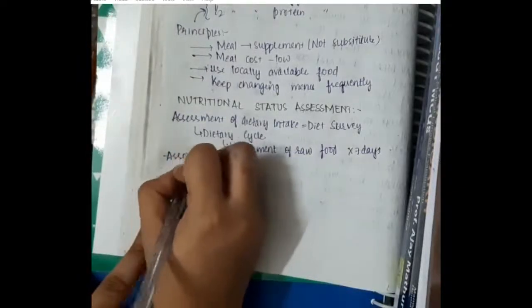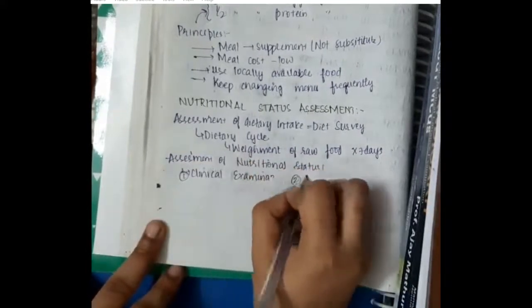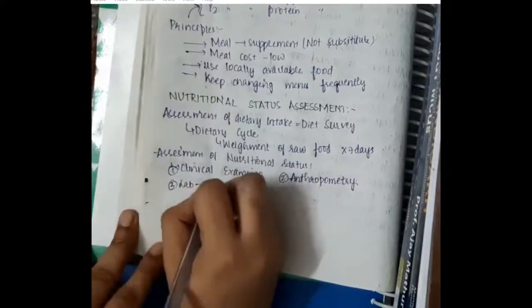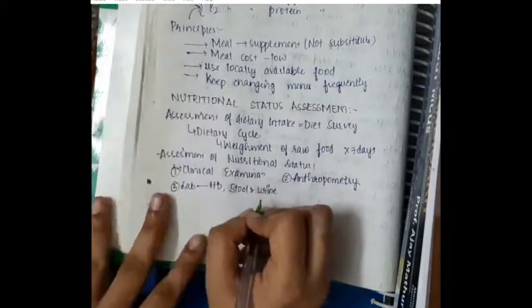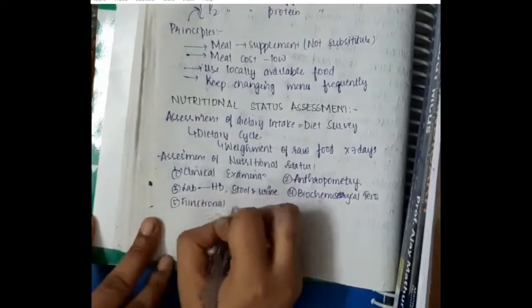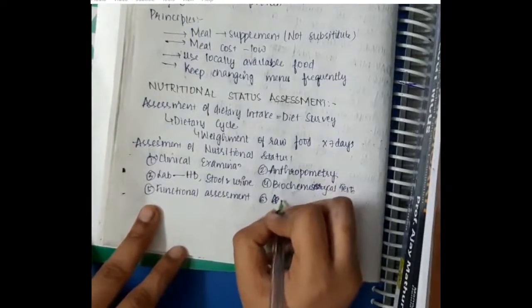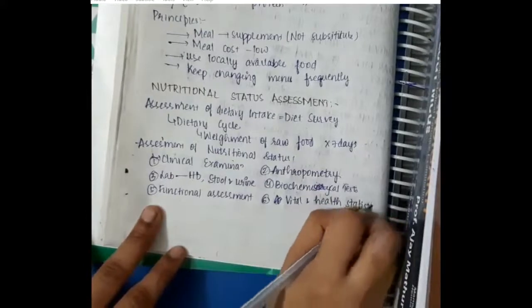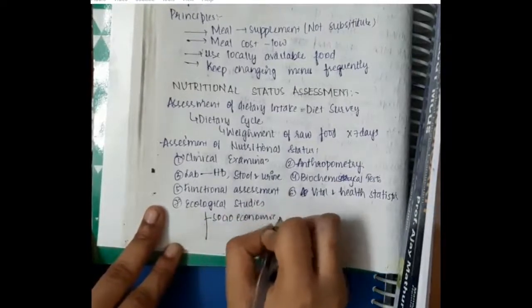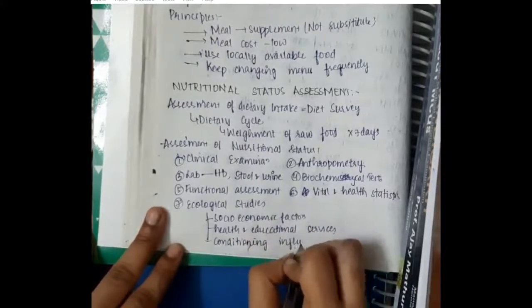Assessment of nutritional status of an individual can be done by the following examination: first, clinical examination; second, anthropometry - that is height, weight, BMI, and mid-arm circumference for children; third, laboratory tests like hemoglobin estimation, stool and urine, biochemical tests; functional assessment can be done; vital and health statistics should also be taken into account; and we have to take into account the ecological studies which include socioeconomic factors, health and educational services, and also the conditioning influences.